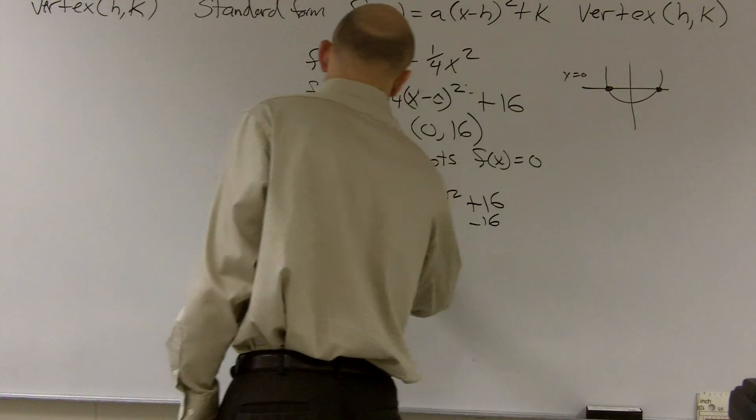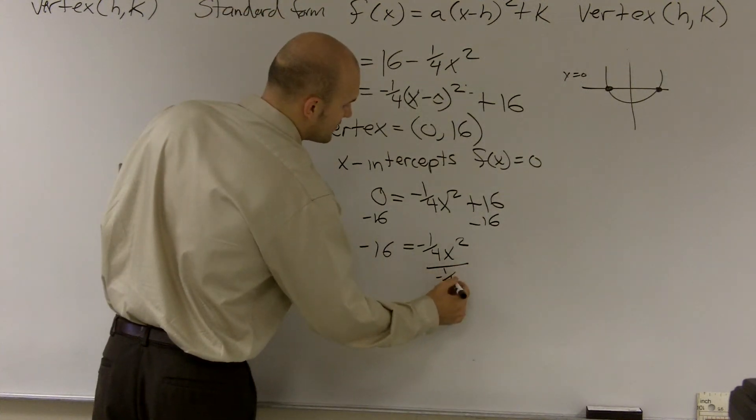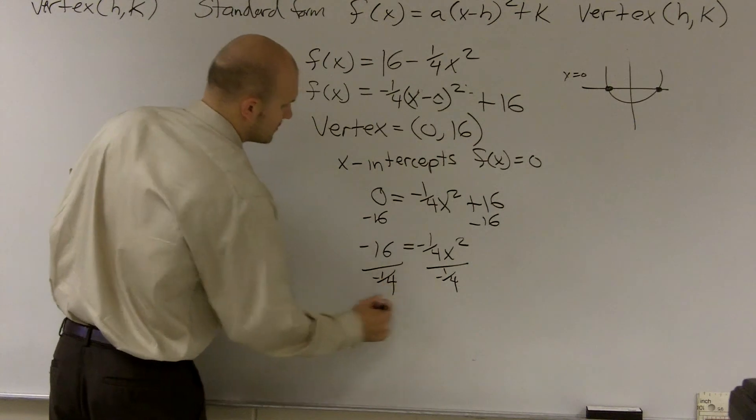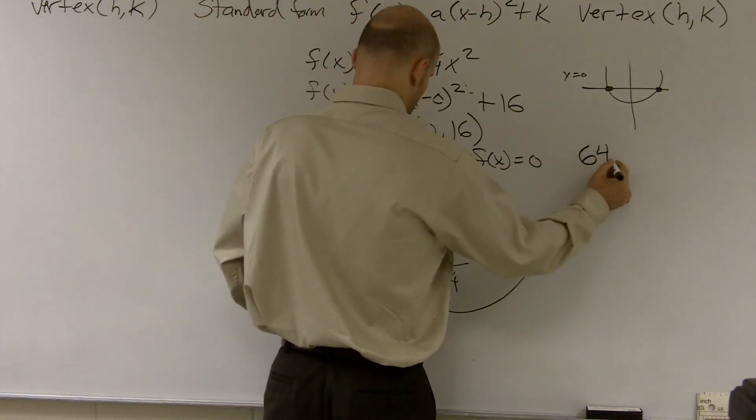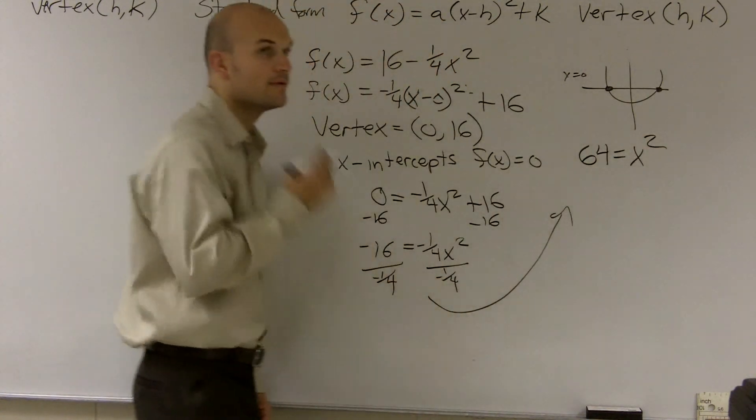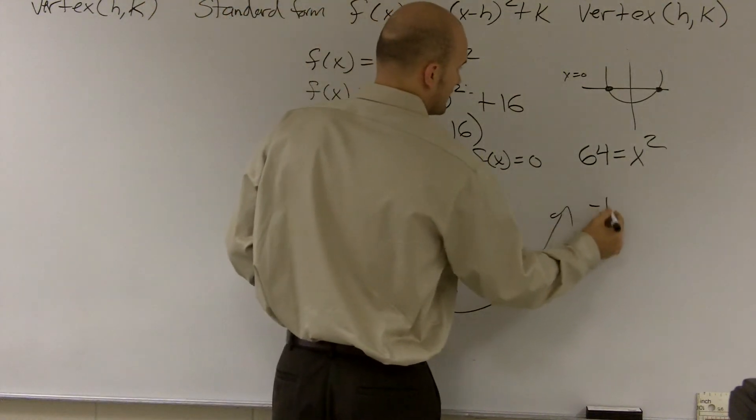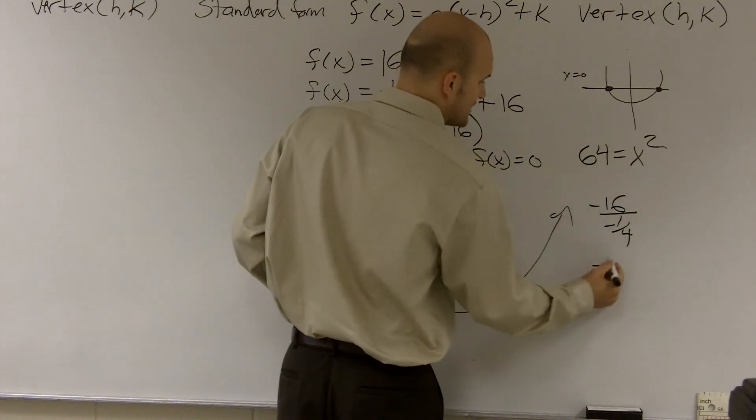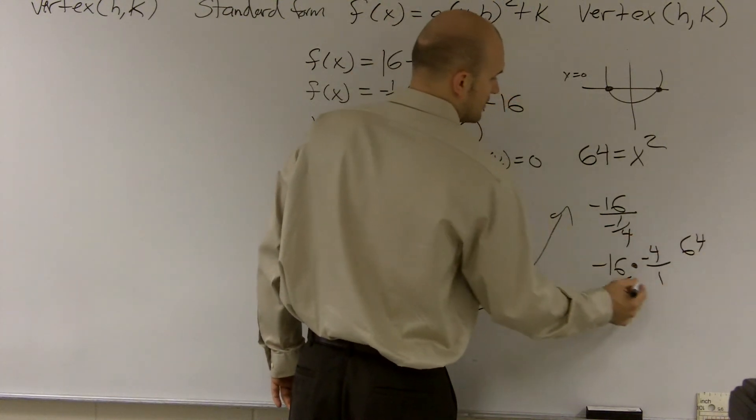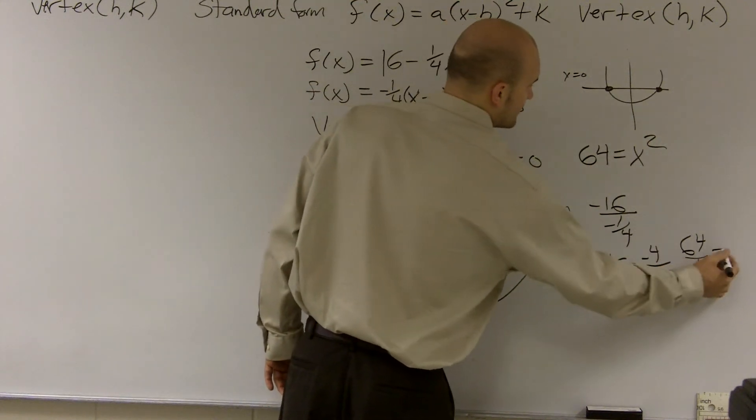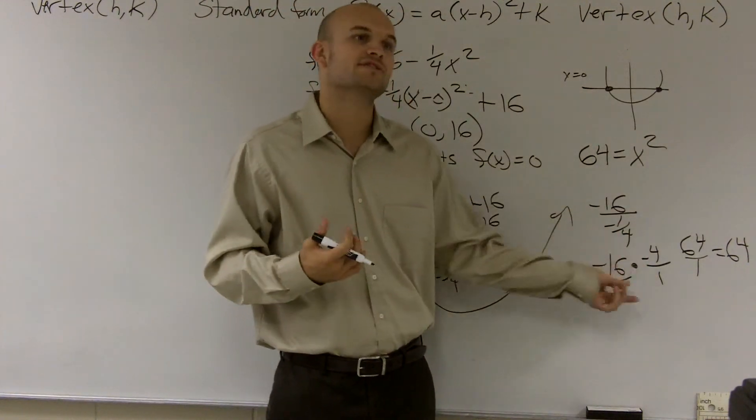So I subtract sixteen. So negative sixteen equals negative one-fourth x squared divided by negative one-fourth. And that's going to give me, negative sixteen divided by negative one-fourth is going to give me a positive sixty-four. So if I have negative sixteen divided by negative one-fourth, that's the same thing as negative sixteen multiplied by negative four over one. Negative sixteen times negative four is sixty-four, positive sixty-four, one times one is one. Right, we don't divide by fractions. What we do is you can multiply by the reciprocal of the fraction.